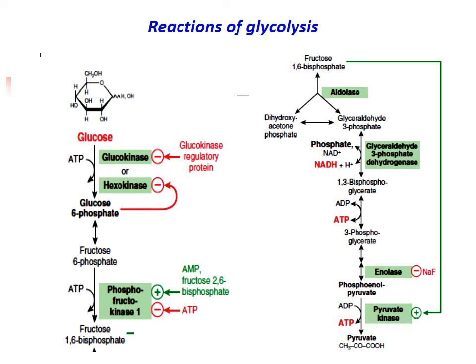Reactions of glycolysis and their regulation: Glycolysis consists of three irreversible reactions catalyzed by glucokinase or hexokinase, phosphofructokinase-1, and pyruvate kinase. These are the regulatory steps of glycolysis. Phosphofructokinase-1 catalyzes the committed step of glycolysis and is the key regulatory enzyme of glycolysis.